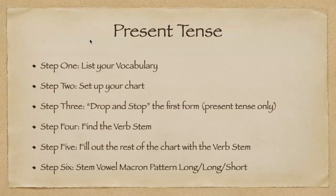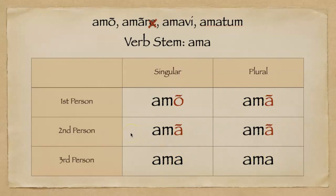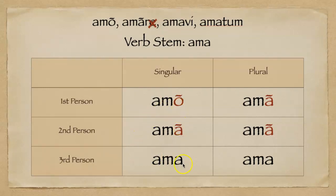Step six: we're going to have a stem vowel macron pattern of long, long, short — long, long, short. Now there is a more sophisticated and expanded reason for why these vowels are long and the ones in third person are short, but for right now, for simplicity's sake, you can just remember the pattern of long, long, short, long, long, short.